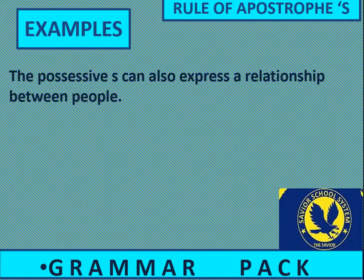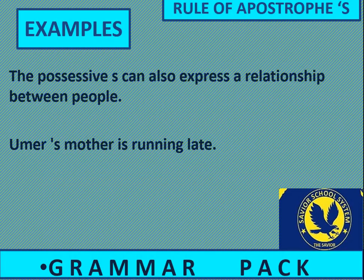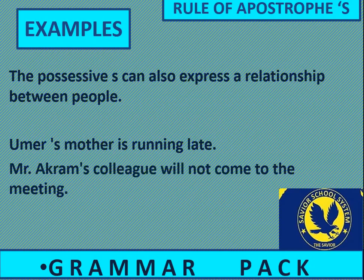The possessive s can also express a relationship between people. For example: Umar's mother is running late — yani Umar ki walida late ho rahe hain. Yahaan 'running late' idiomatic phrase hai jis ka matlab hai late hona. Mr. Akram's colleague will not come to the meeting — Mr. Akram ke saathi meeting mein nahi aayenge.